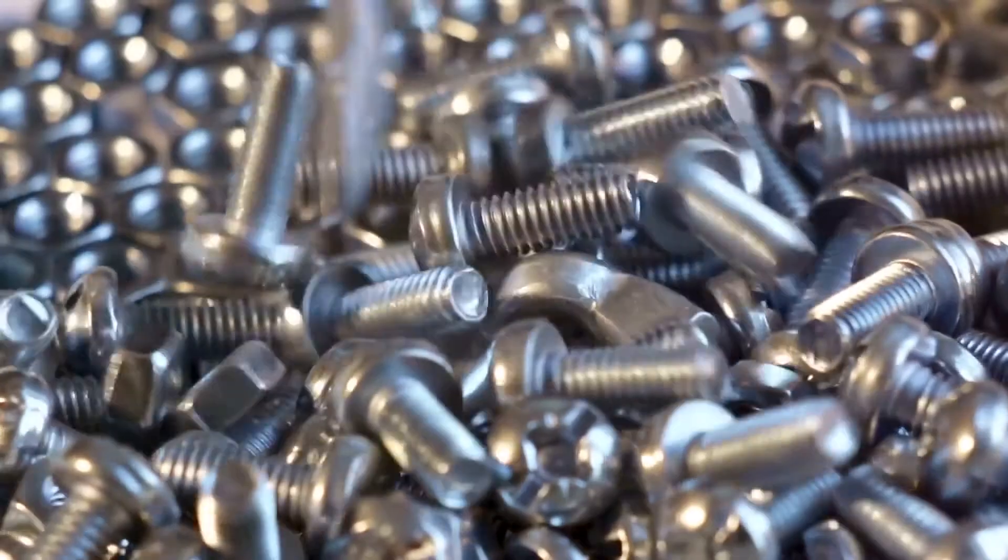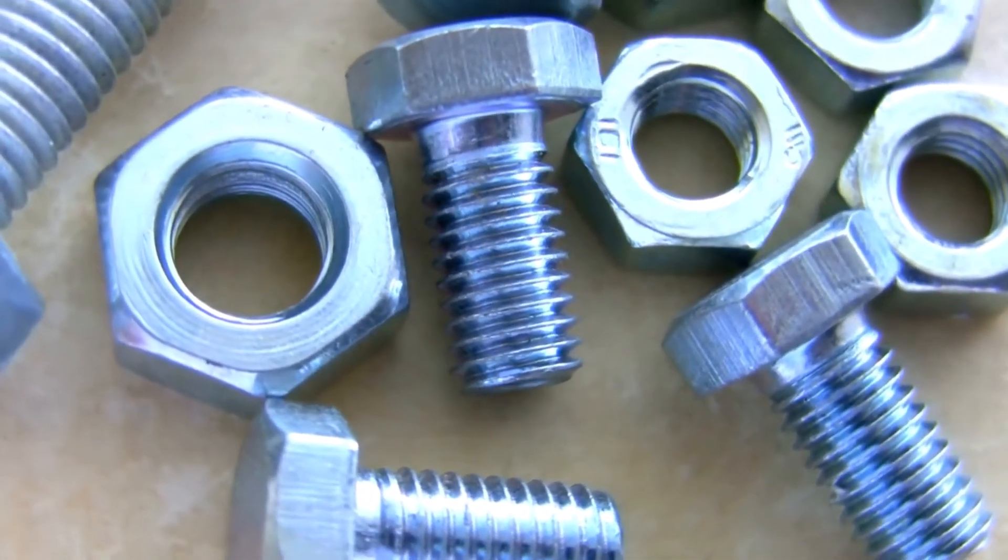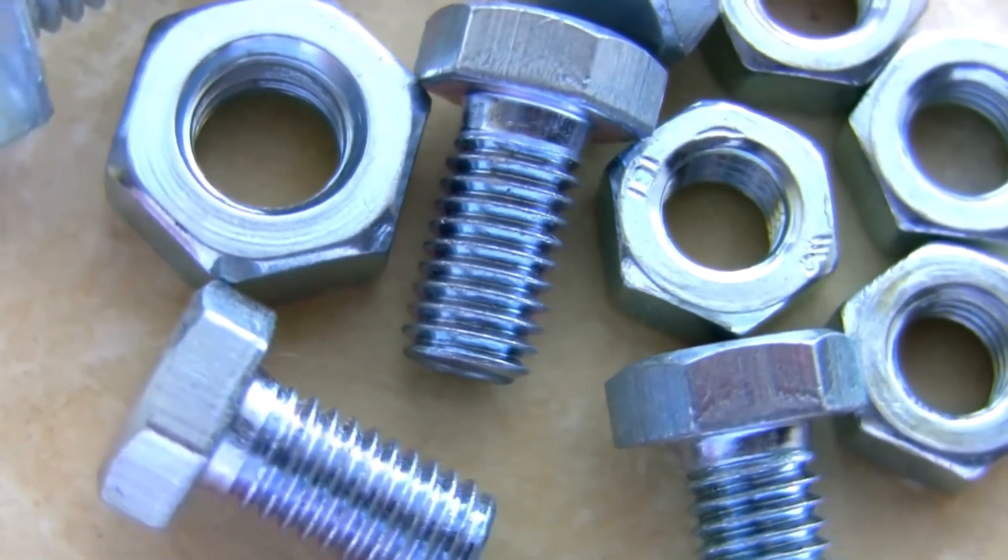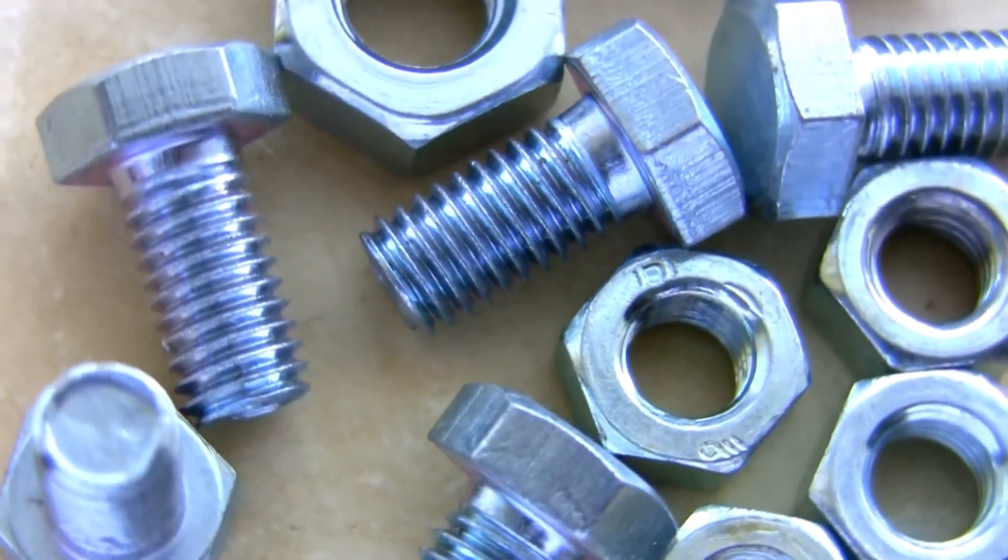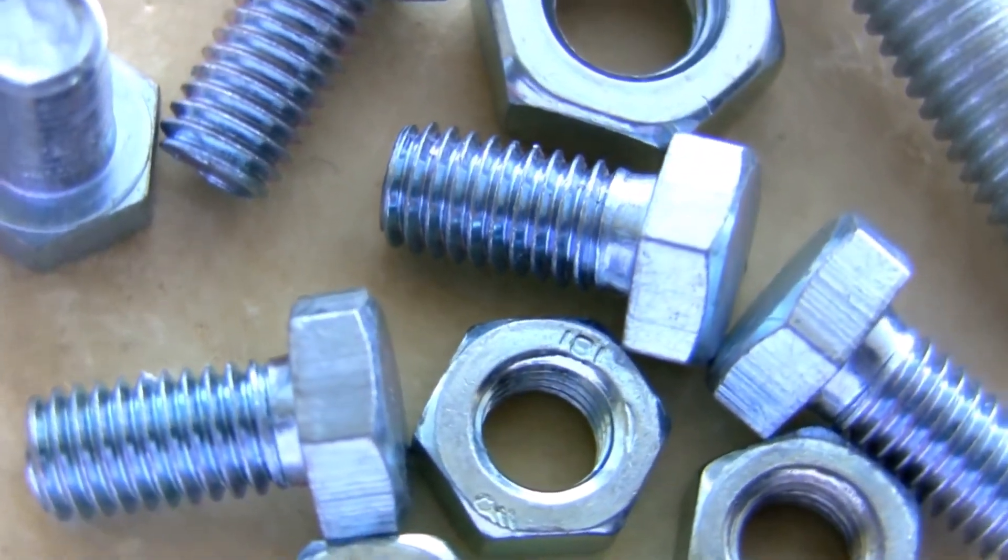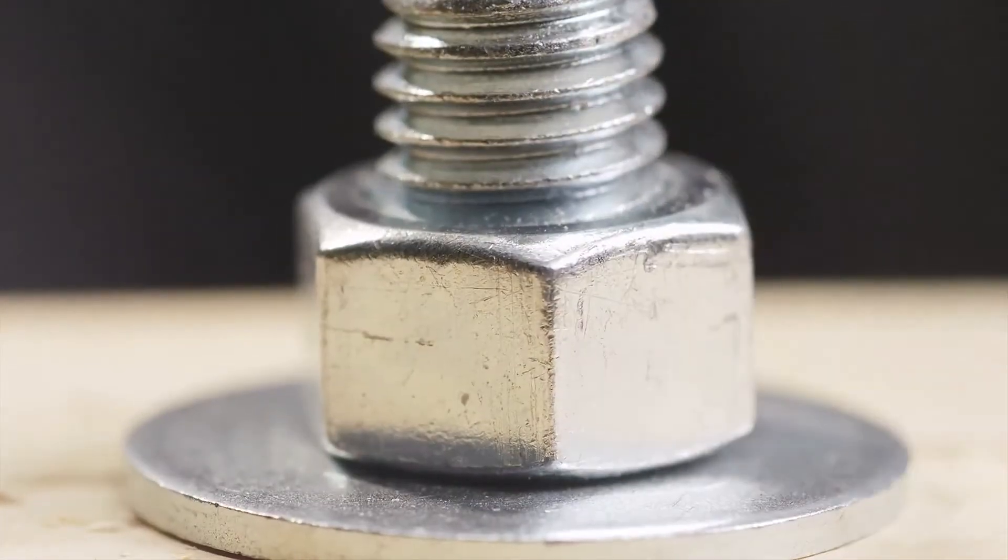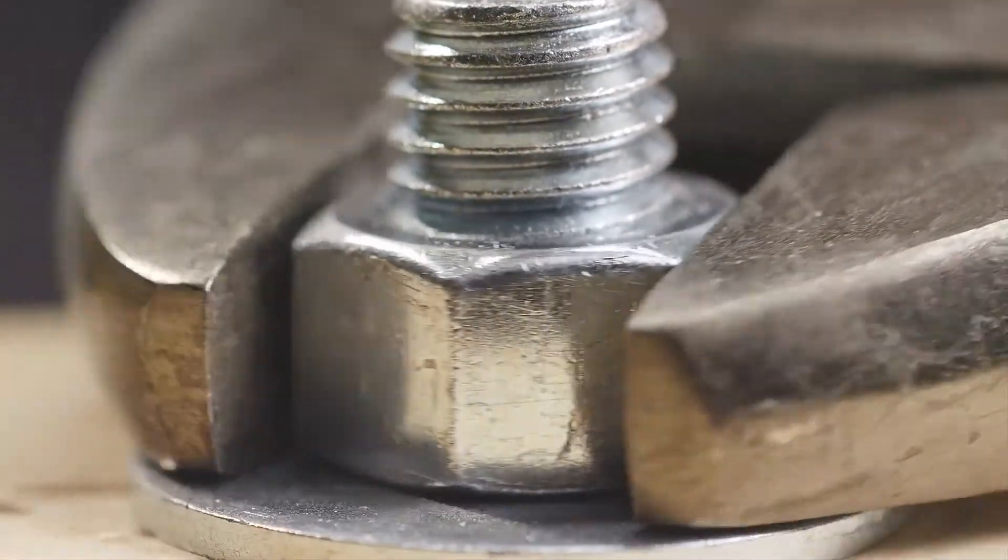For example, if we need M3X20 screws, we could, based on our specification list, choose ISO 4762, hexagon socket head cap, M3X20 screws. This is a standardized part and the manufacturing company is already producing millions of those parts. Also, using these standardized screws, we do not worry about assembling them because appropriate tools already exist.